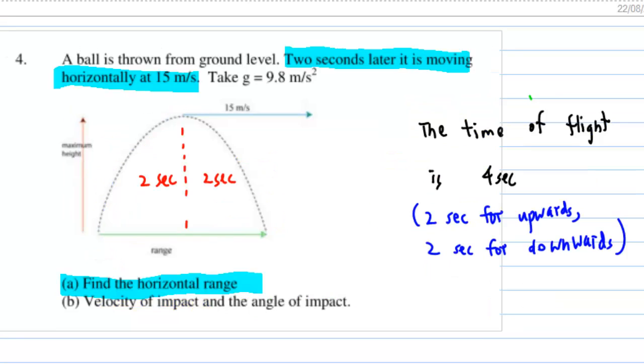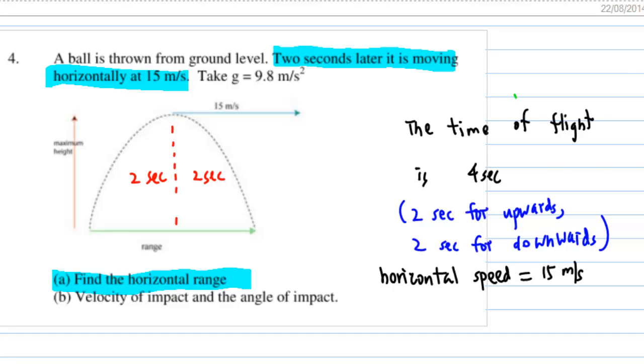To find the horizontal range, the time of flight is 4 seconds: 2 seconds for the upward motion, 2 seconds for the downward motion. As there is no horizontal acceleration, the horizontal speed is always equal to 15 meters per second. Therefore, for the flight of 4 seconds, the horizontal distance is 60 meters.